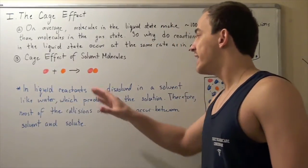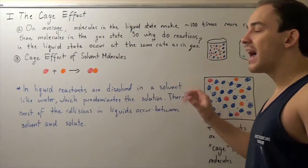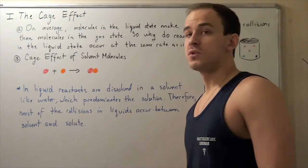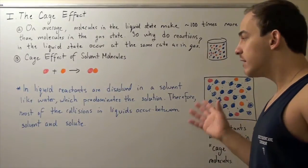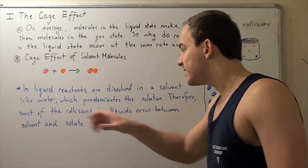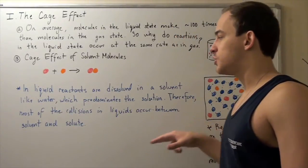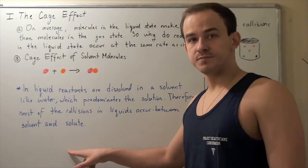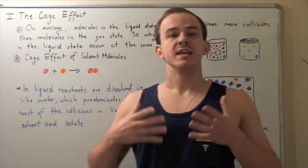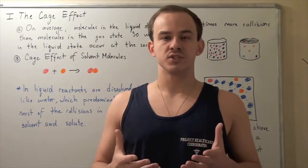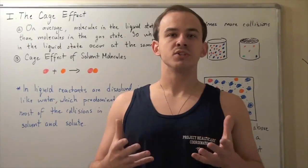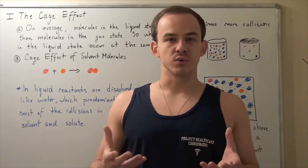Now suppose we dissolve these in a liquid. In liquid, reactants are dissolved in a solvent, like for example water, which ends up predominating the solution. Therefore, most of the collisions in liquids occur between solvent and solute. And this means that even though the collisions occur more frequently in liquids and aqueous solutions, a lot of those collisions are between solvent and solute molecules.